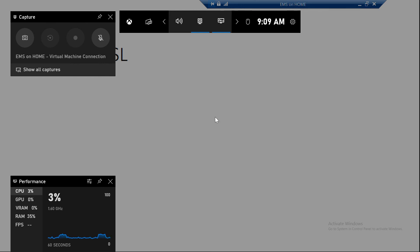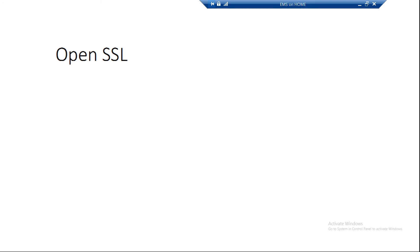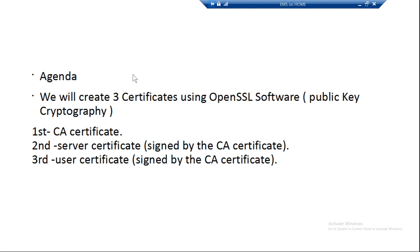Good morning, welcome to Network 360 channel. In this video we are covering SSL certificates using OpenSSL software. We can use OpenSSL on Windows as well as Linux — it's Apache-based software. We will create three certificates: a CA certificate, a server certificate, and a user certificate for our lab and test environment. Note: certificates created here are not intended for production. It is recommended to use an internal managed CA or a publicly trusted third-party CA certificate for production.